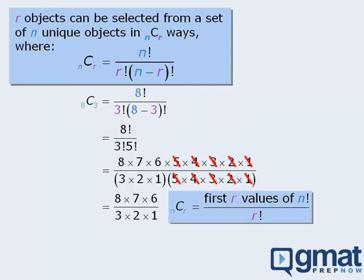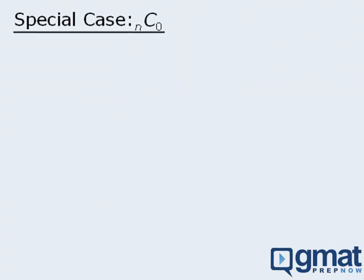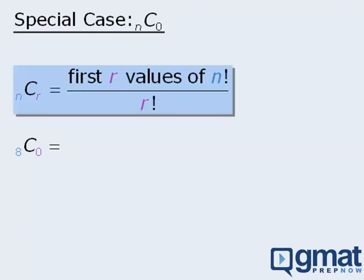Before we conclude, we need to examine a special case. Consider what happens if we have a combination question where we have n objects and we want to choose zero of them. For example, if we have eight employees and must choose zero of them to be on a committee, we need to evaluate eight choose zero. But if we use our shortcut, we'll run into a problem: the numerator must be the first zero values of eight factorial — and it's not clear what this equals.